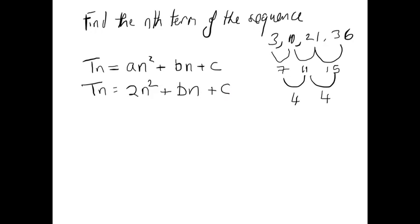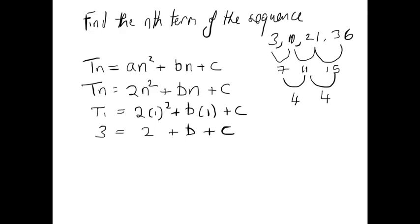To find b and c, we need to set up equations using the first and second terms. The first term equals 2 times 1 squared plus b times 1 plus c. We know the first term is 3, so we get 3 equals 2 plus b plus c. Tidying that up: we take the 2 over to give 3 minus 2, which gives us 1, and we're left with 1 equals b plus c. That's our first equation. Now we need one other equation with b and c in it, and then we can use simultaneous equations.